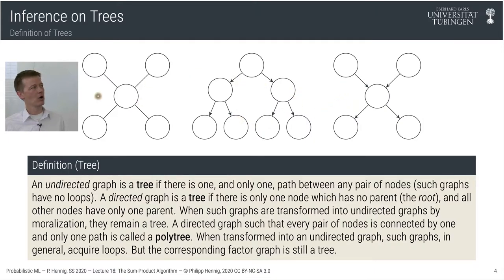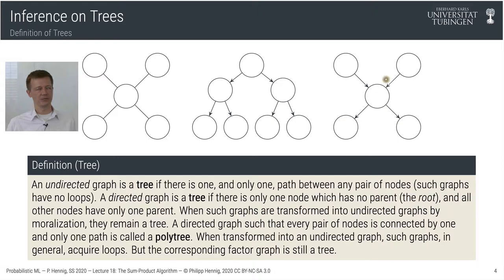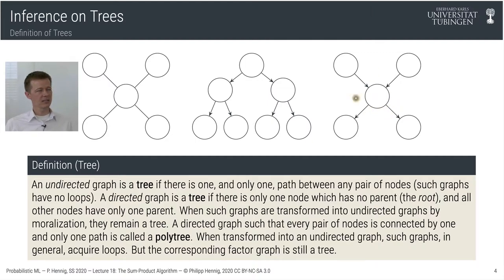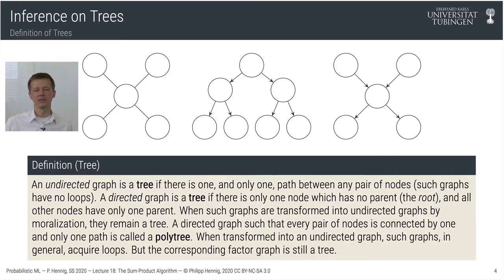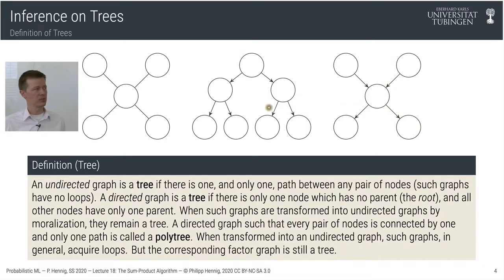There are also directed graphs called polytrees—directed graphs where every pair of nodes is connected by one and only one path. If we turn a polytree into an undirected graph, we would have to marry the parents, introducing connections that make it a non-tree. That's one reason to prefer factor graphs: building a factor graph from a polytree results in a graph that still remains a tree.